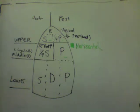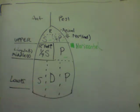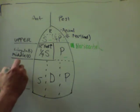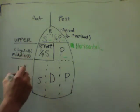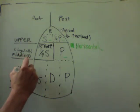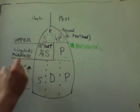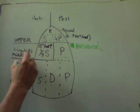For the lingula and the middle lobe, we are going to do 12 inches of foot of the bed elevation. These three in green, the bed is going to be horizontal — except for that left lobe exception. All the basal segments — the anterior, lateral, and posterior basal segments of the lower lobes, right and left — you're going to have the foot of the bed elevated 18 inches.